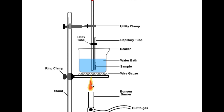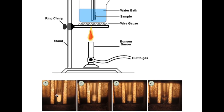Underneath the water bath, a Bunsen burner will warm the water. At some point you'll reach the melting point of the solid and you can observe it turn into liquid just by looking closely. The capillary tube holds the solid in the middle; as you heat it, you'll see the solid begin to change and eventually all turn into liquid. At that point, record the temperature shown on the thermometer — that is the melting point.